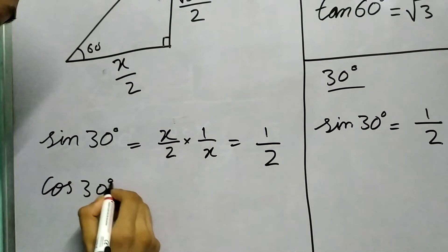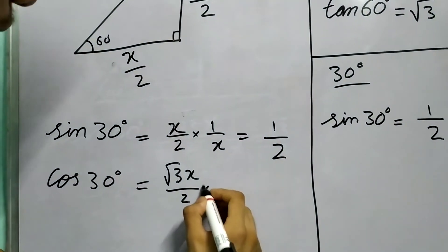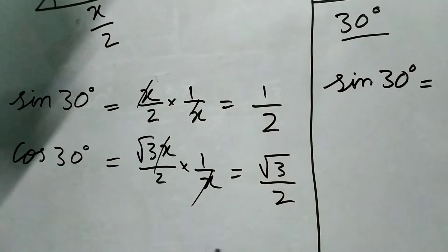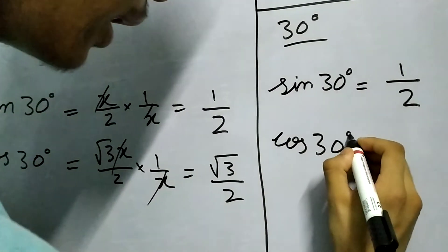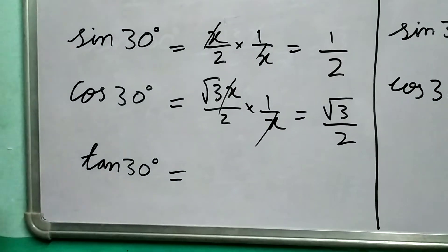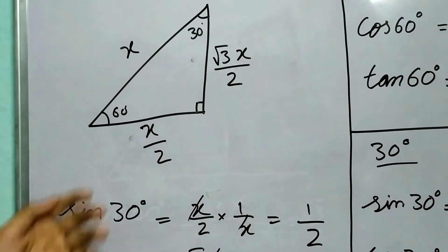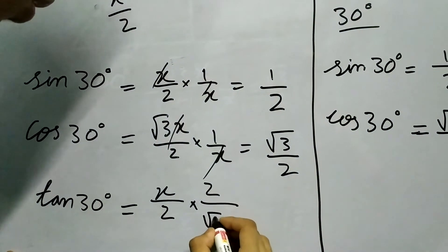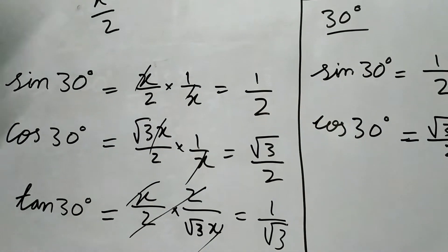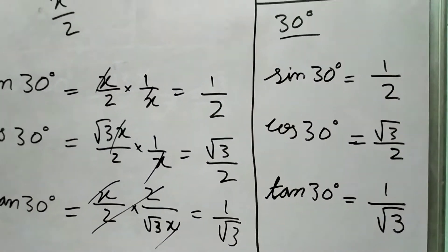What about cos 30 degree? Again, cos 30 degree will be base, this is the base, upon hypotenuse, root 3 by 2. So cos 30 degree will be root 3 by 2. And what about tan 30 degree? So again, yeah you can use sine 30 degree upon cos 30 degree. We are just doing using the base perpendicular: x by 2 upon root 3 x by 2. x cancels out, the 2 cancels out, we get 1 by root 3 as our answer. Tan 30 degree will be 1 by root 3.